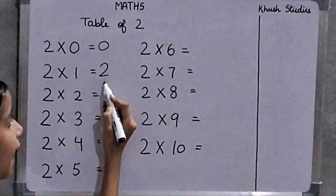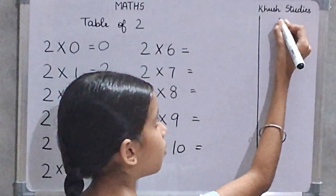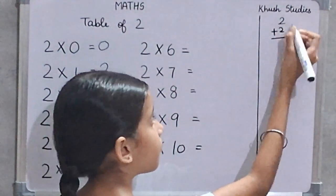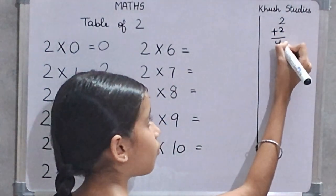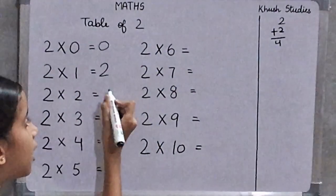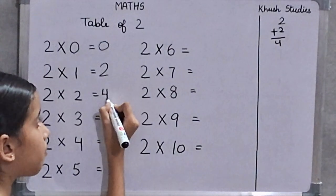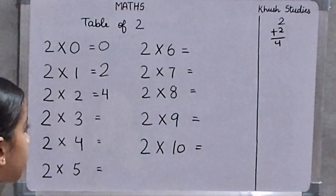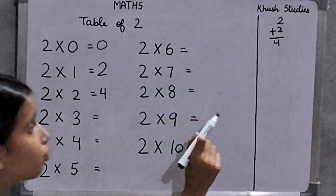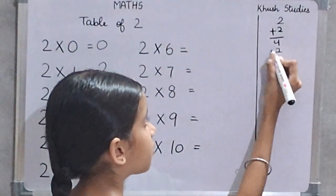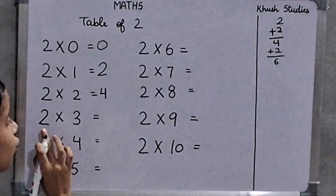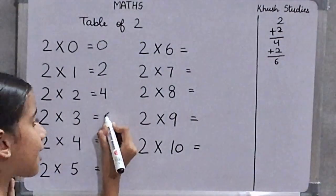We will add 2 plus 2, which gives 4. So, 2 twos are 4.